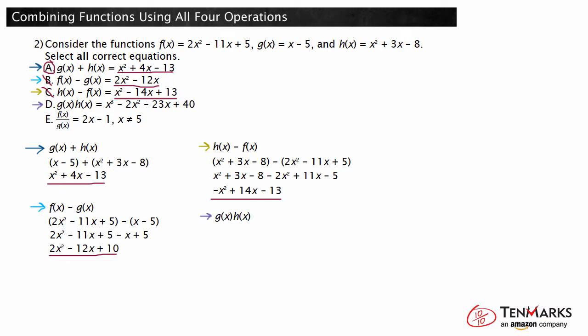Let's look at the fourth equation. Substituting the given expression in for g of x and h of x results in the quantity x minus 5 times the quantity x squared plus 3x minus 8. Performing multiplication requires the distributive property. Distributing x to x squared plus 3x minus 8 gives x cubed plus 3x squared minus 8x. And distributing negative 5 to x squared plus 3x minus 8 gives negative 5x squared minus 15x plus 40. Now we need to combine like terms. x cubed cannot be combined with any other term. Combining 3x squared with negative 5x squared gives negative 2x squared. Combining negative 8x with negative 15x gives negative 23x.